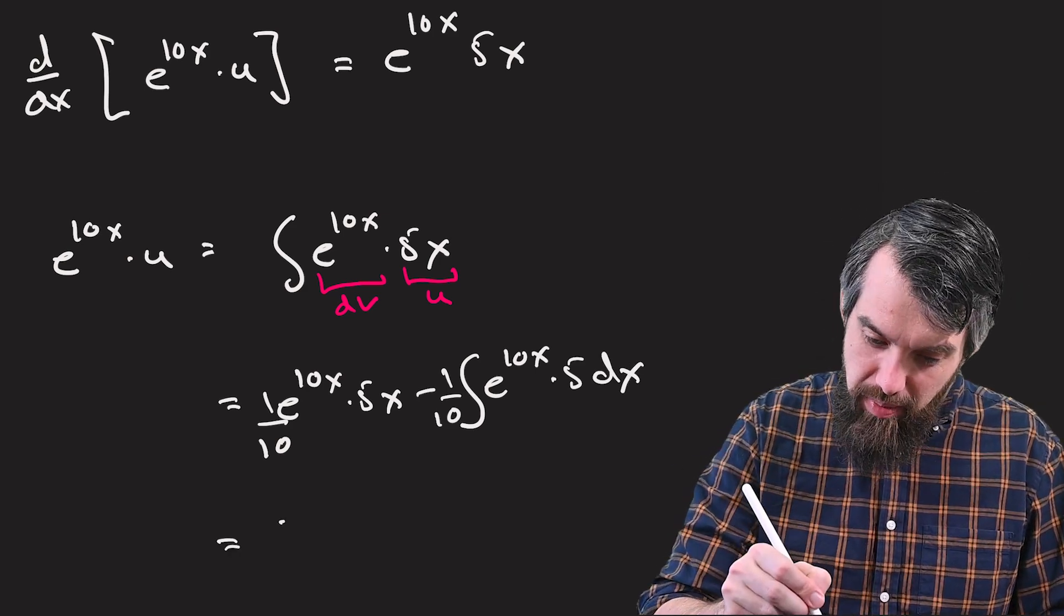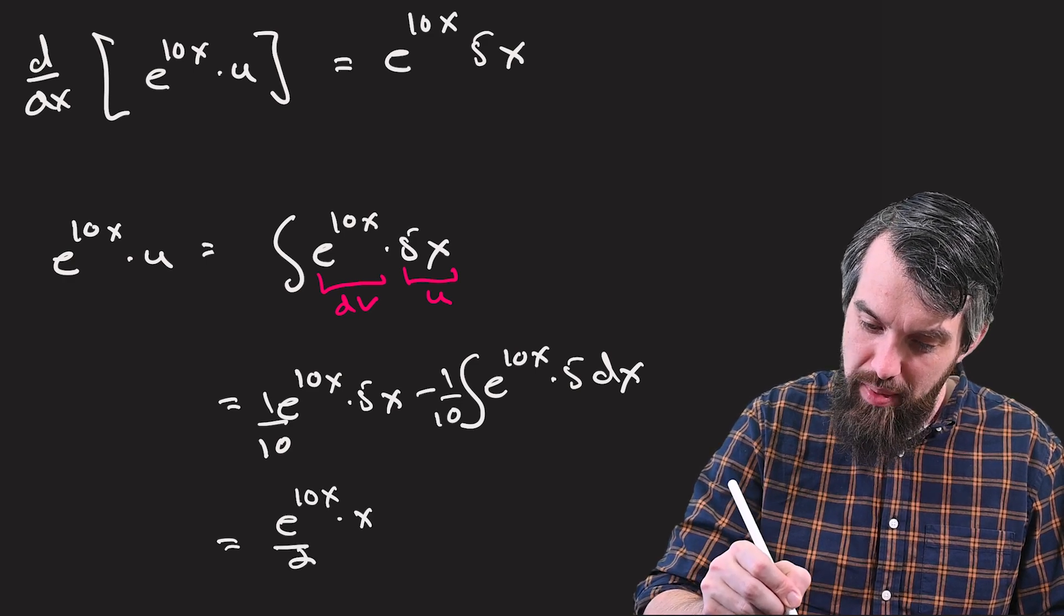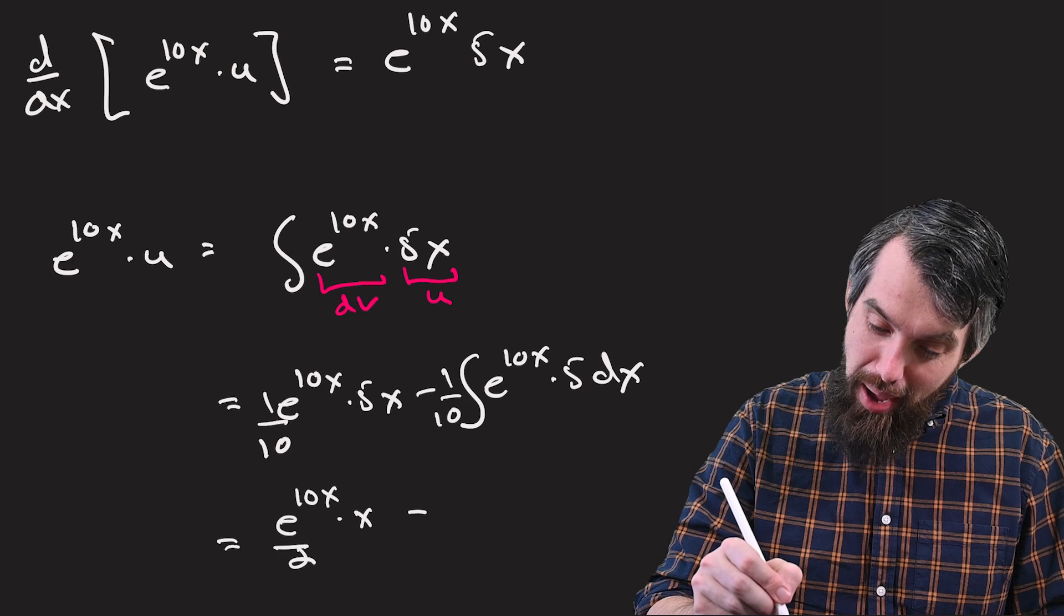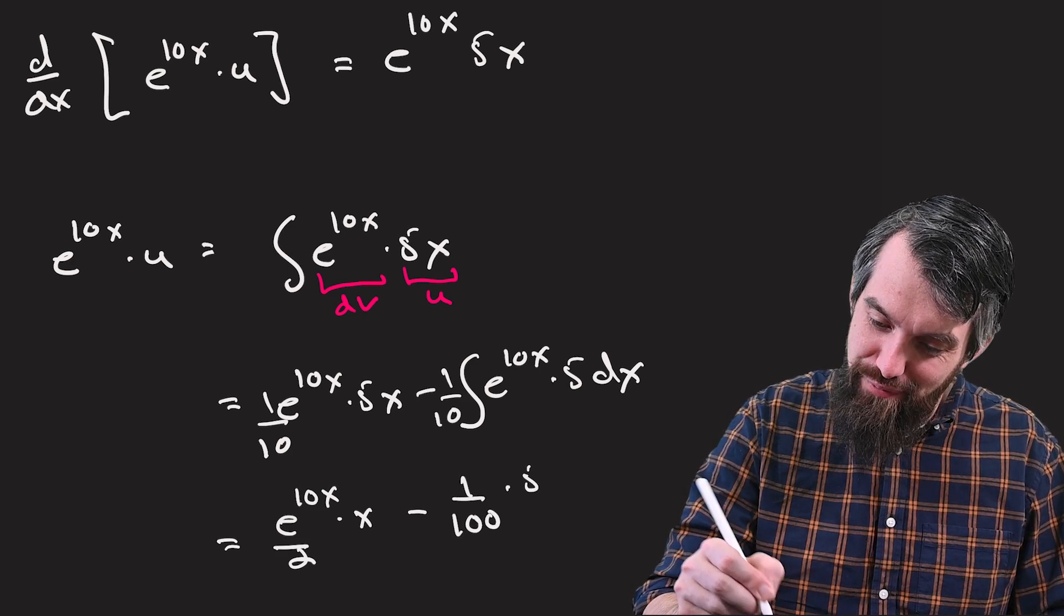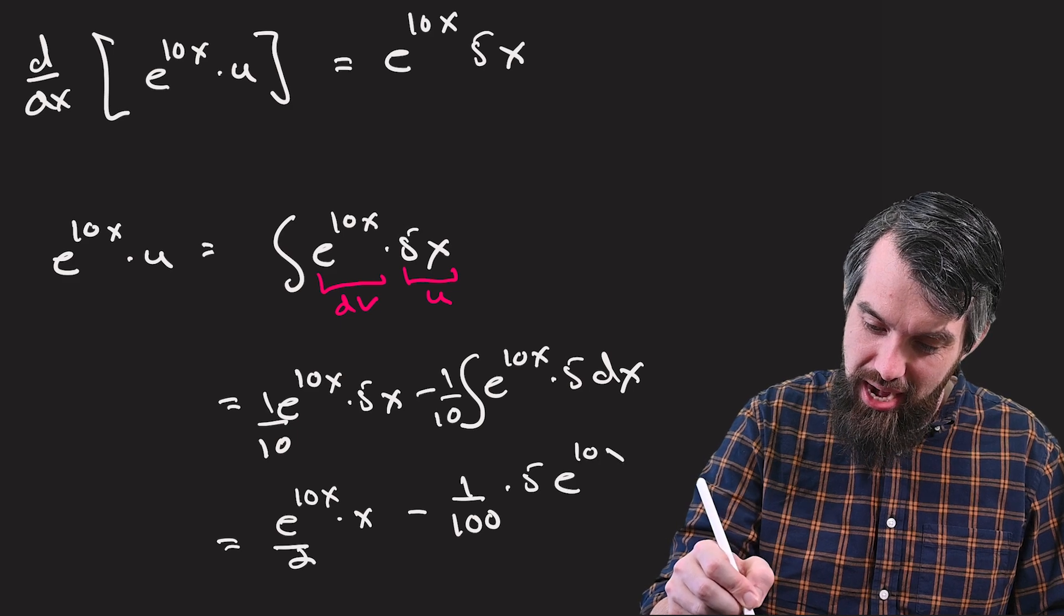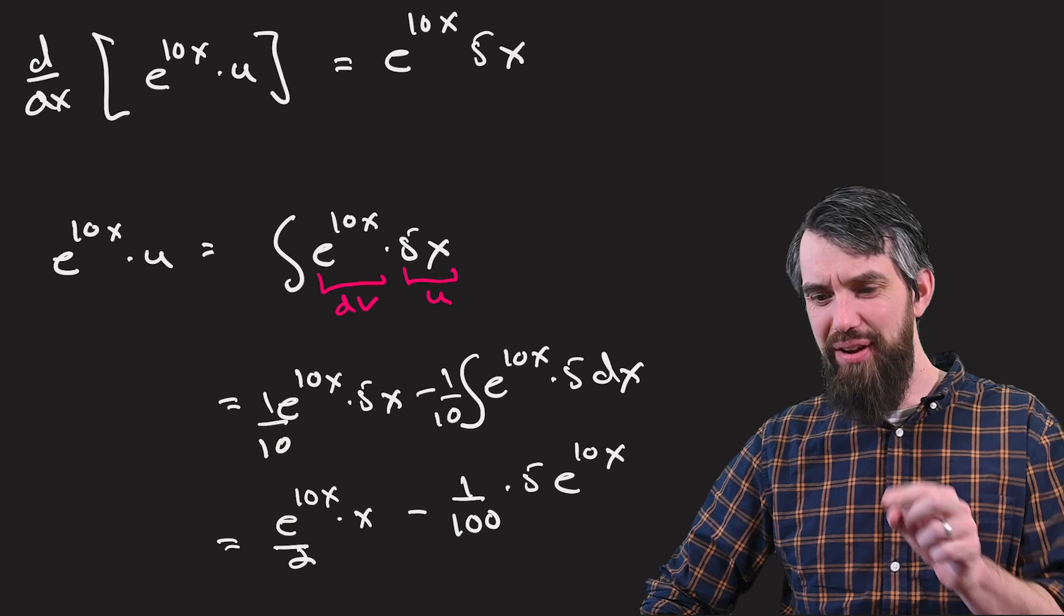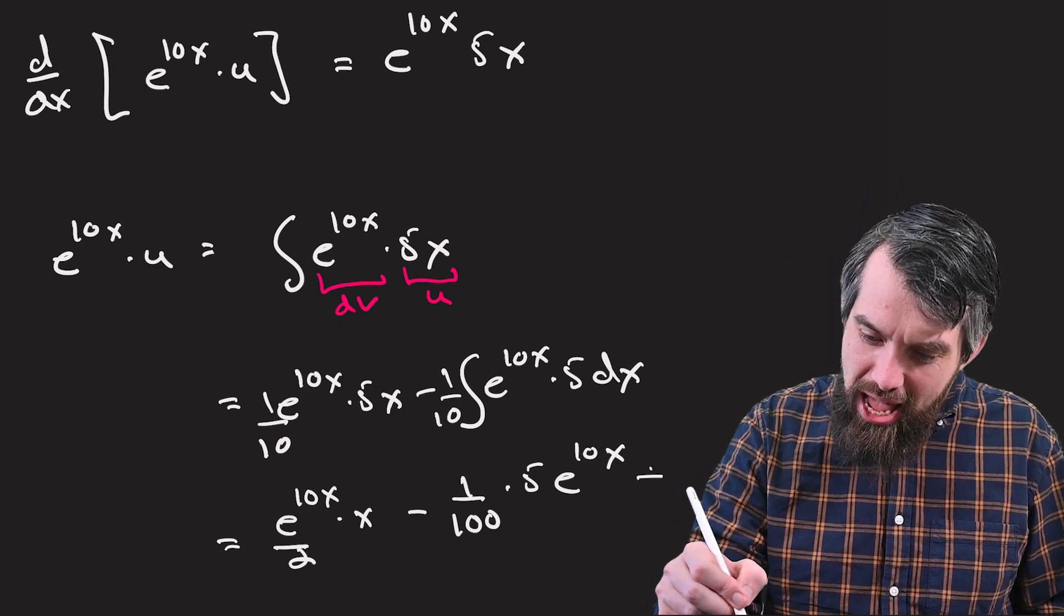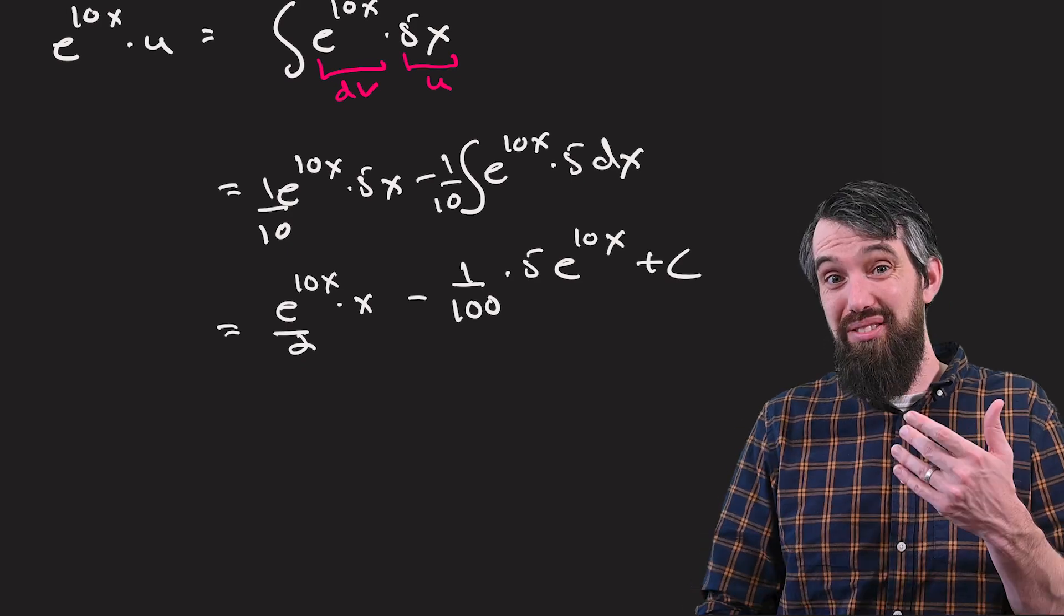Finally, I can come here and say this is going to be e to the 10x times x divided out by 2. And then when I integrate, I get minus one hundredth multiplied by 5e to the 10x. And then I also, and then I can't forget, of course, at this stage, I am going to have a plus c, and I don't want to get rid of it at this particular stage, because it is important.